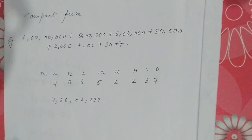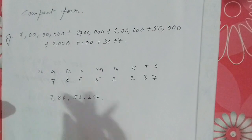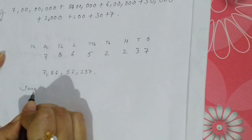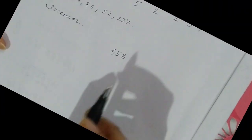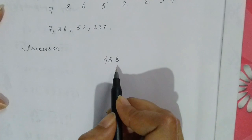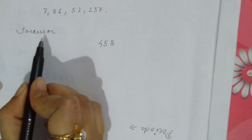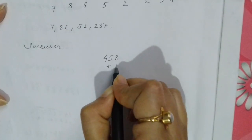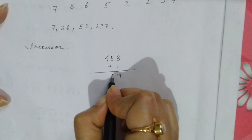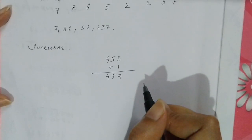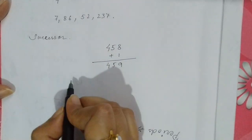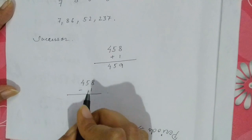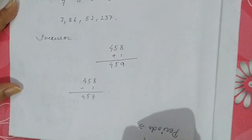The rest of the chapter is very easy. Next we find successors and predecessors of numbers. The successor means we simply add one to the number. For example, the successor of 458 is 459. For the predecessor, we subtract one from the number. So the predecessor of 458 is 457.